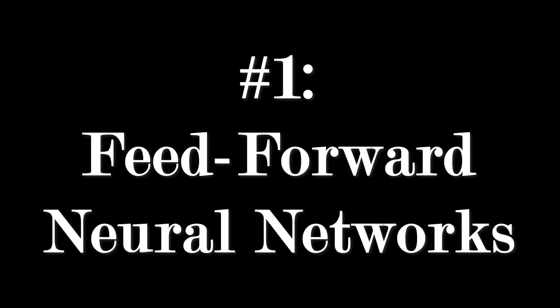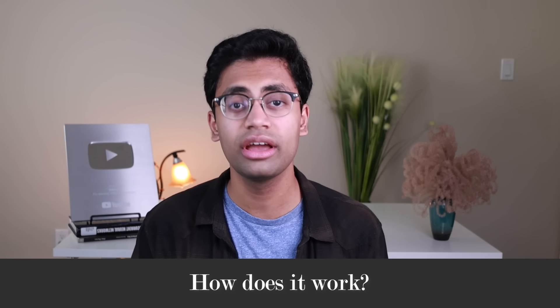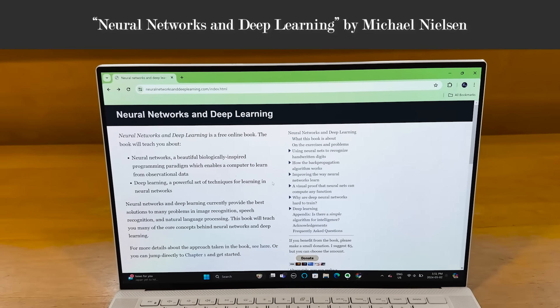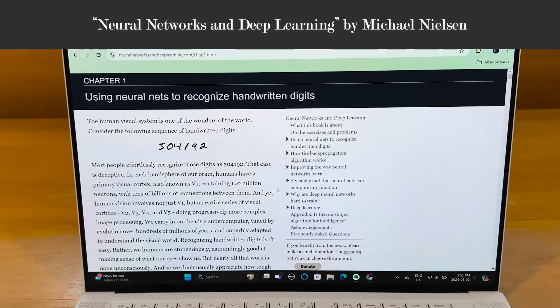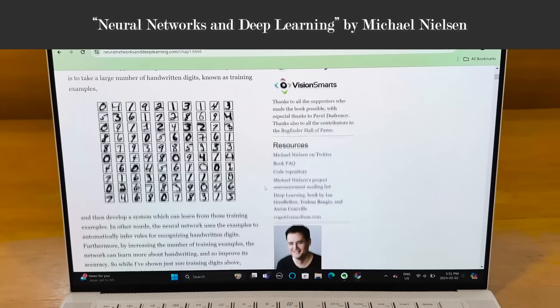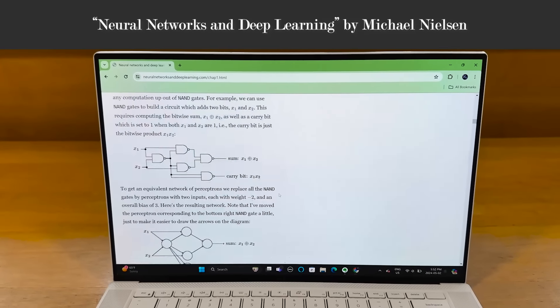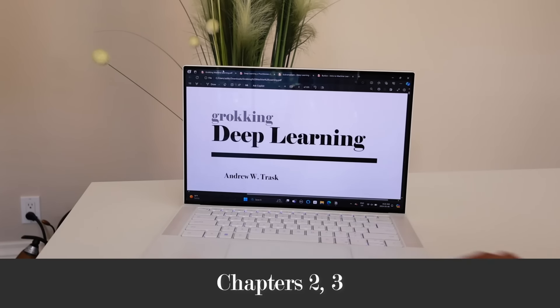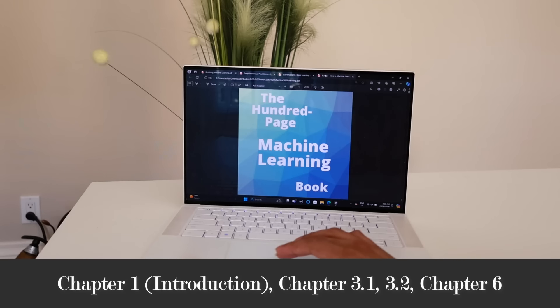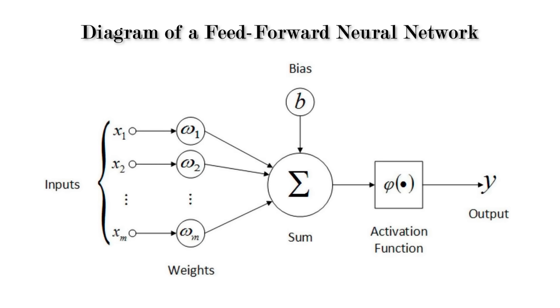Our first topic is feedforward neural networks. The main questions to answer here are: what is a neural network, how does it work, and what are the basic parts? To learn this, look no further than chapter one of the book by Michael Nielsen — it is so clear and mathematically precise, and he has very kindly made it freely available online. If you're reading Grokking Deep Learning, chapters two and three are really good. After you've read all this, a good test of whether you've understood the content is this diagram of a basic feedforward neural network. If you can understand what the diagram is saying and what all the various parts are, I think you're in good shape.